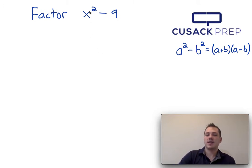So if I factor x squared minus 9, I use the formula a squared minus b squared equals a plus b times a minus b.